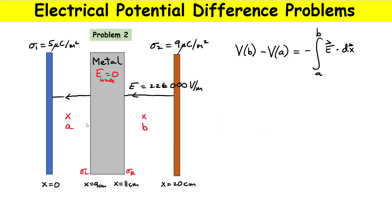The piece of metal was electrically neutral — zero net charge. The metal must produce an electric field that cancels the field from the external plates inside itself. Since there's no net charge, whatever charge separation occurs must satisfy this: whatever charge is on the left is equal and opposite to what's on the right. If you have equal and opposite charges on the surface of the metal, they will not produce a field outside of the piece of metal. So we already know the electric field everywhere in space.